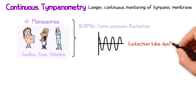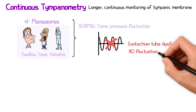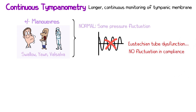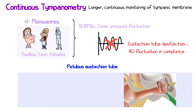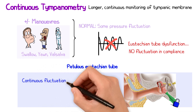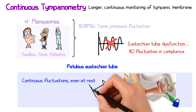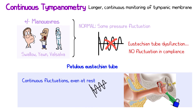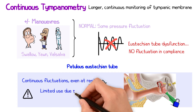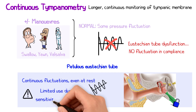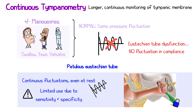However, if there is eustachian tube dysfunction, there would be no fluctuation in middle ear compliance. Continuous tympanometry could also be used to identify a patulous eustachian tube, where the eustachian tube remains abnormally open, leading to constant pressure fluctuations even at rest, which can be observed in continuous tympanometry. However, it is not widely used and is limited by its sensitivity and specificity in identifying or ruling out these conditions.